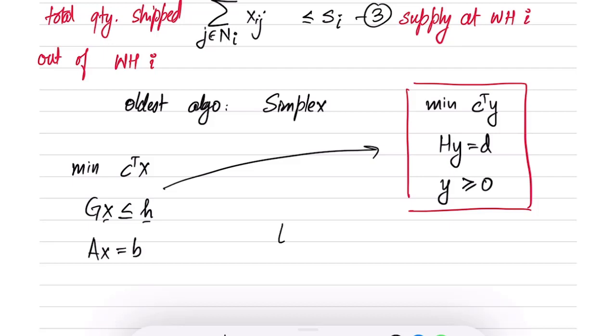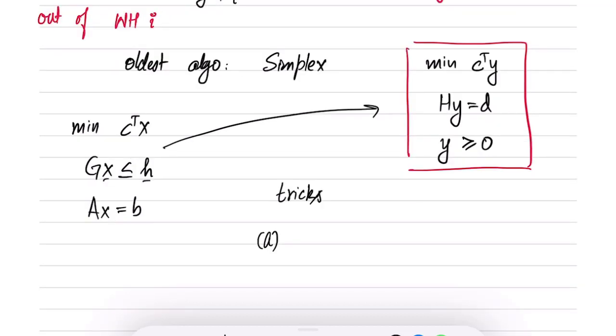There are two tricks that can be used for this conversion. First is the slack variable trick which we have already seen. We can say that Gx plus s equals h, and s is greater than or equal to 0. By introduction of slack variables all the constraints become equality constraints.